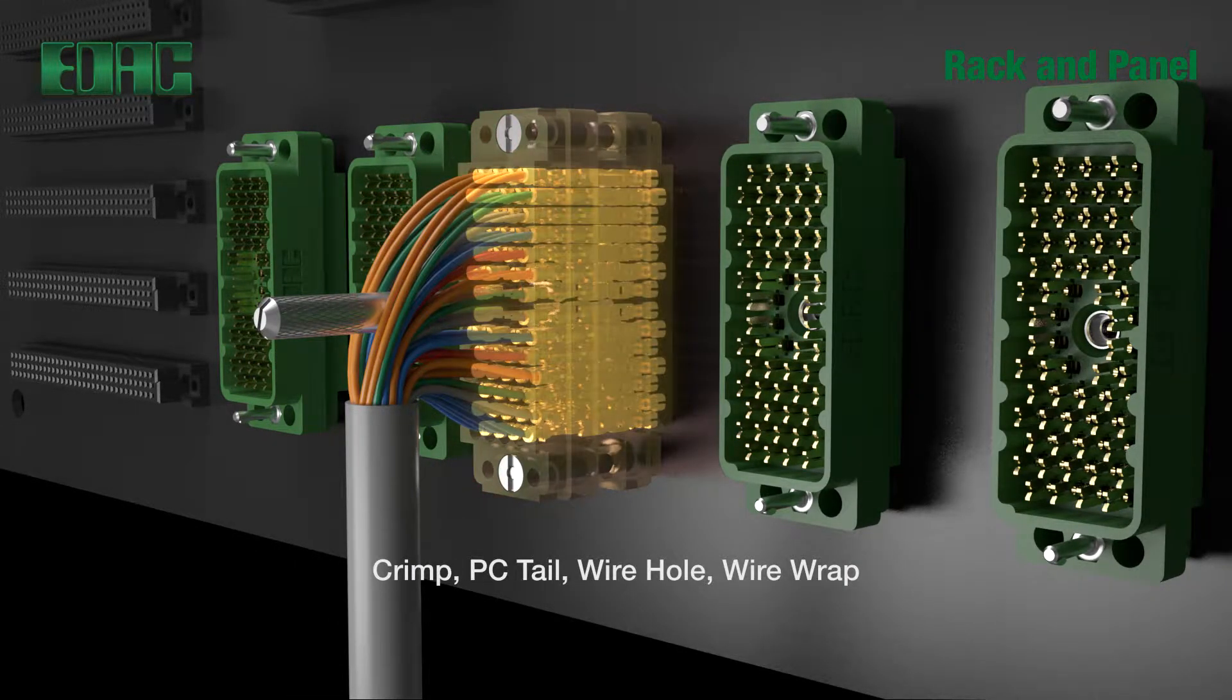Contact terminations include crimp, PC tail, wire hole, and wire wrap.